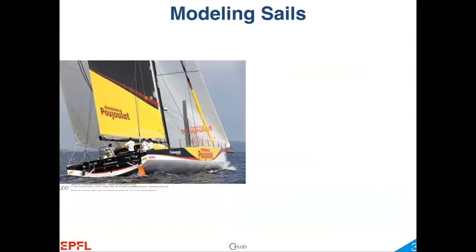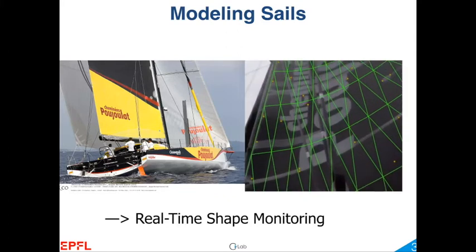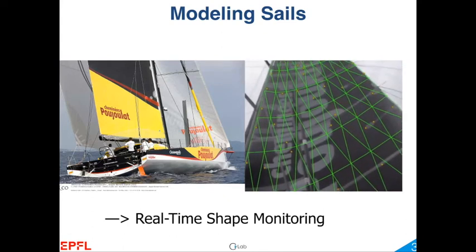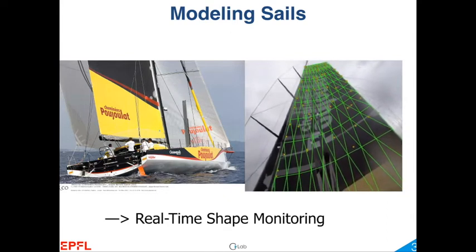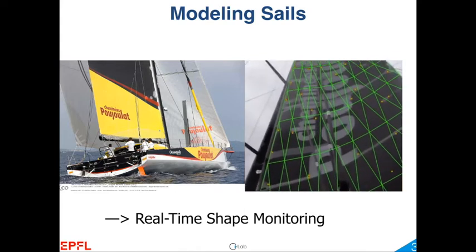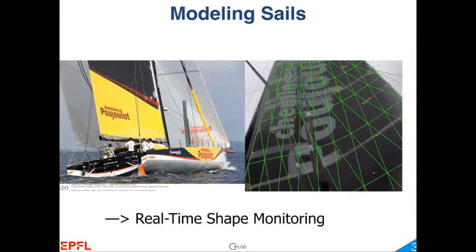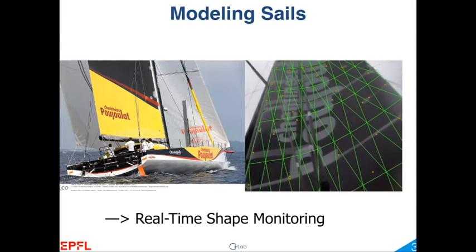Another example: we've done a lot of work in sports of all kinds. This is a sailboat meant to go around the world with a single person, and that takes 70 to 80 days. Nobody can stay alert for that long. So what we've been working on is having a system that tracks the sail, sees how it deforms, and advises the sailor on how it should be trimmed. An improved version of this would trim the sail automatically, so you'd have a robotic sailboat, basically.